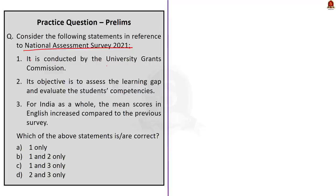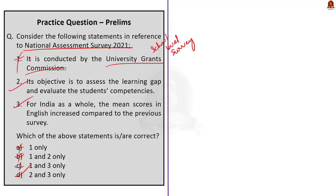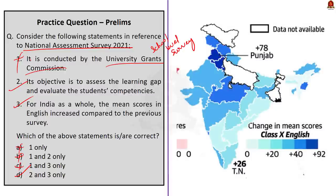The next practice question is on NAS 2021. Statement 1 says it is conducted by the University Grants Commission — this is incorrect because NAS is a school-level survey, not university-level. Knowing this immediately eliminates options A, B, and C, leading to the answer 'two and three only' without even needing to verify Statement 3. This demonstrates the importance of knowing basics — using the elimination technique is key to answering prelims questions correctly.